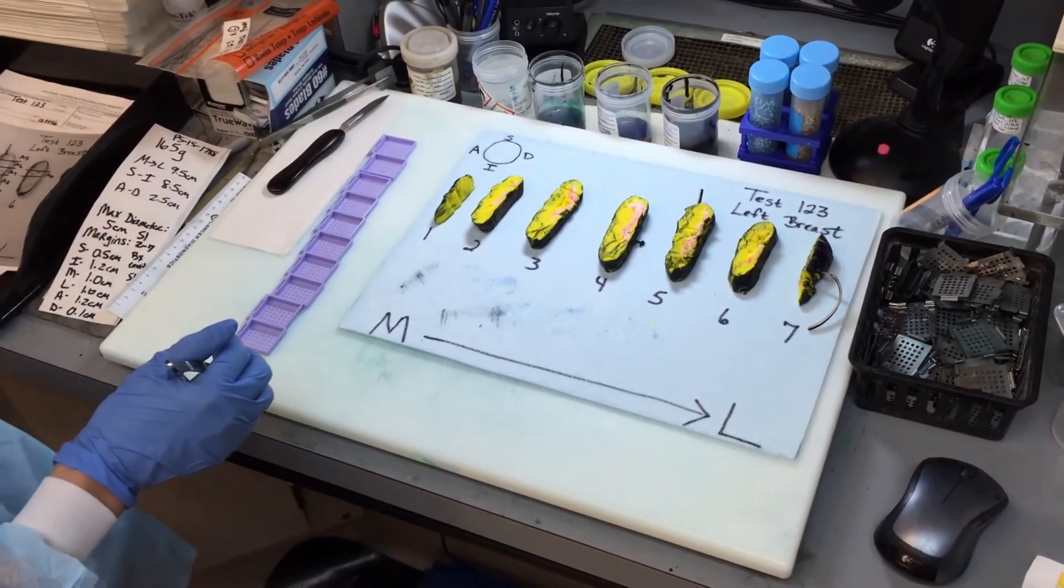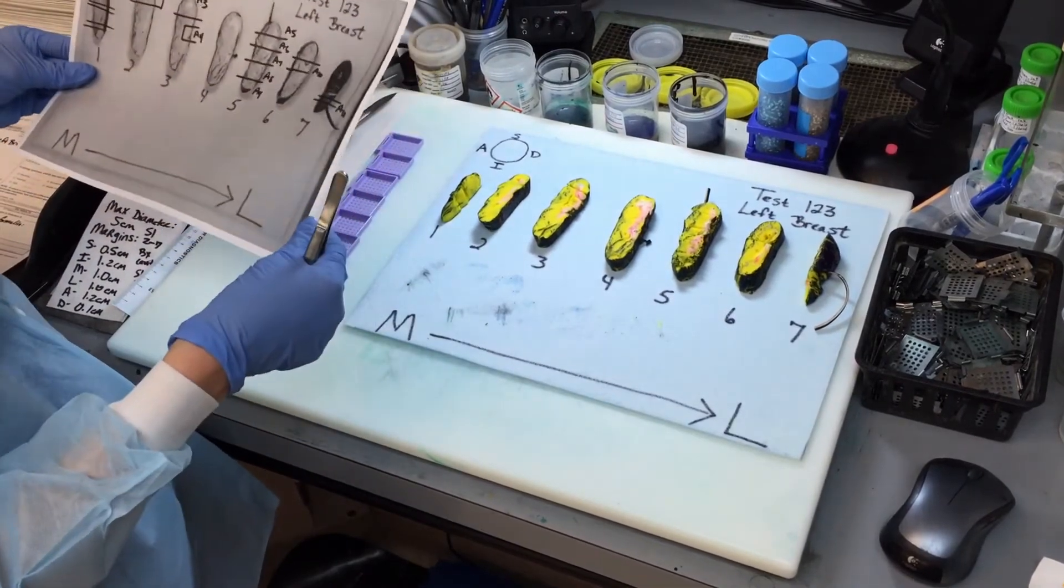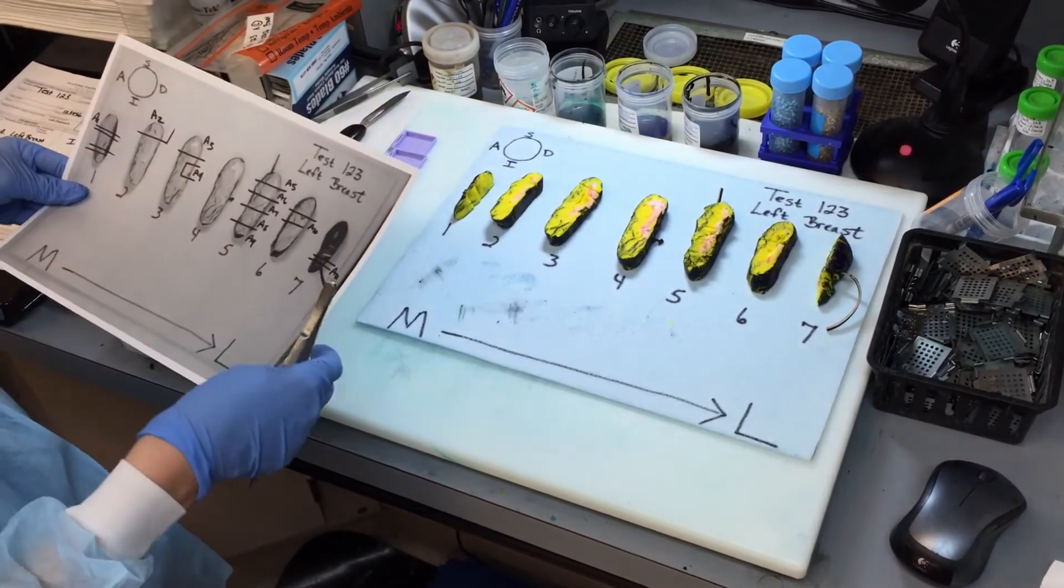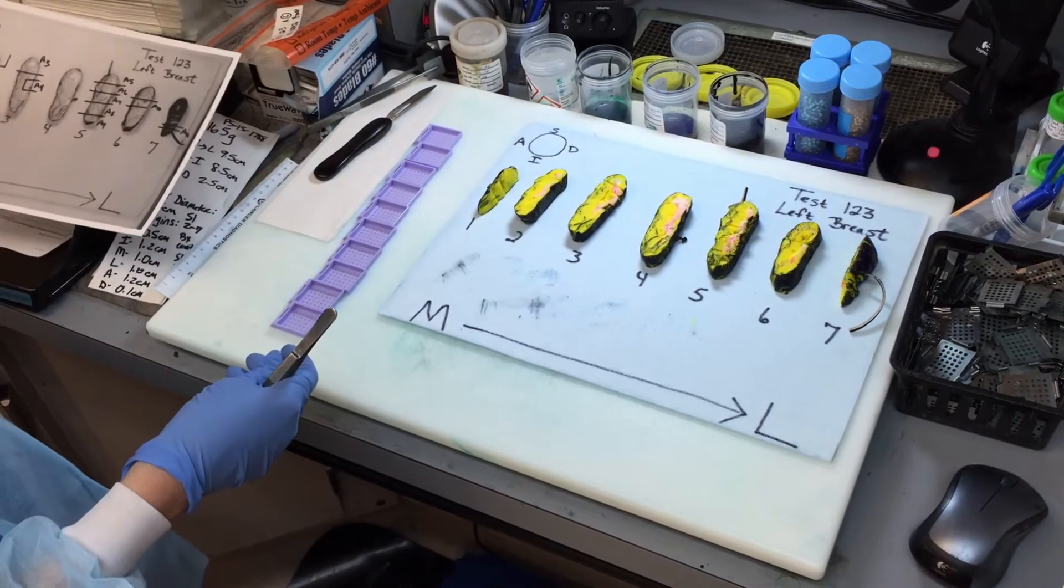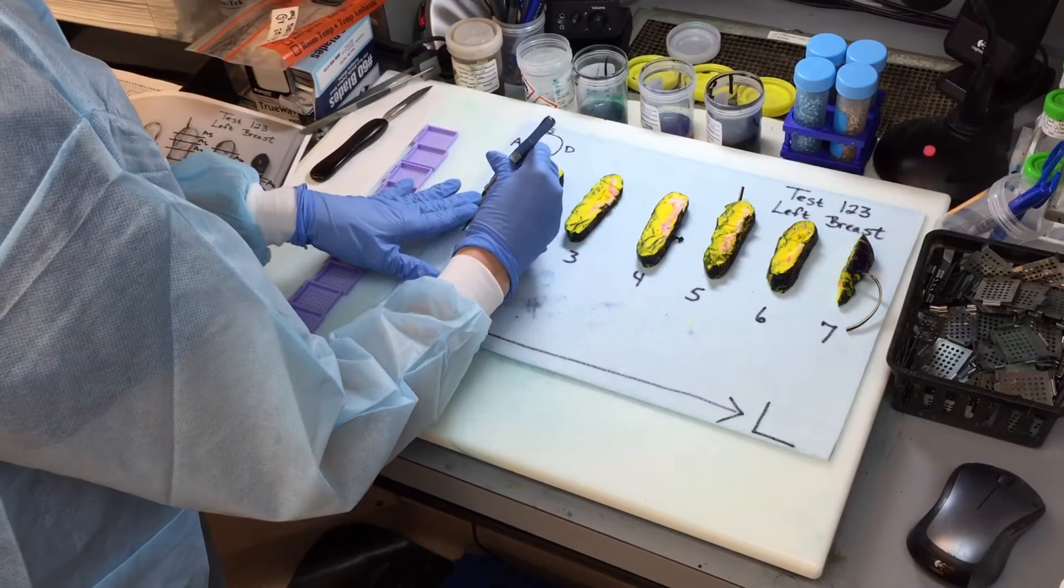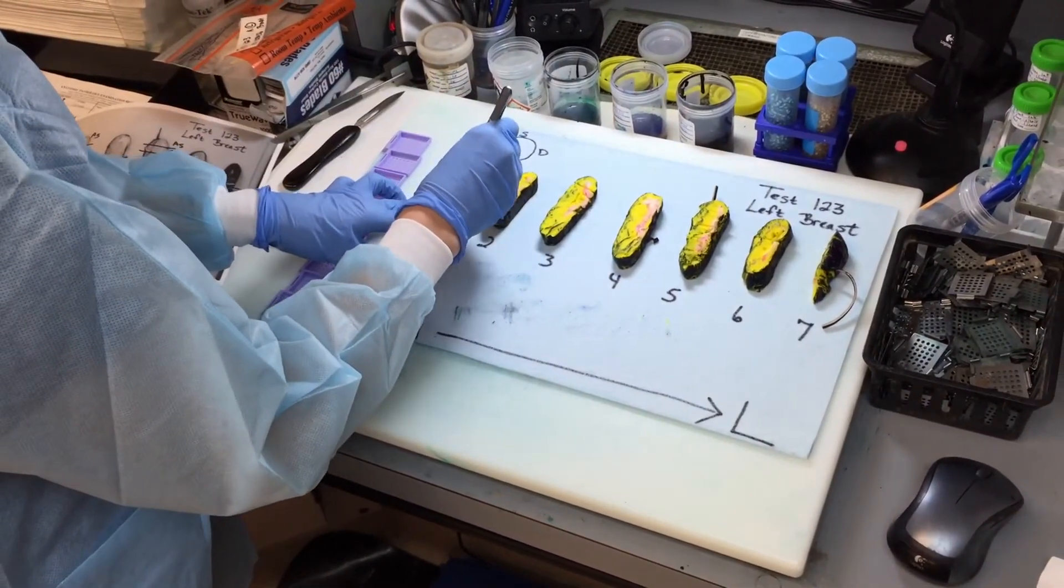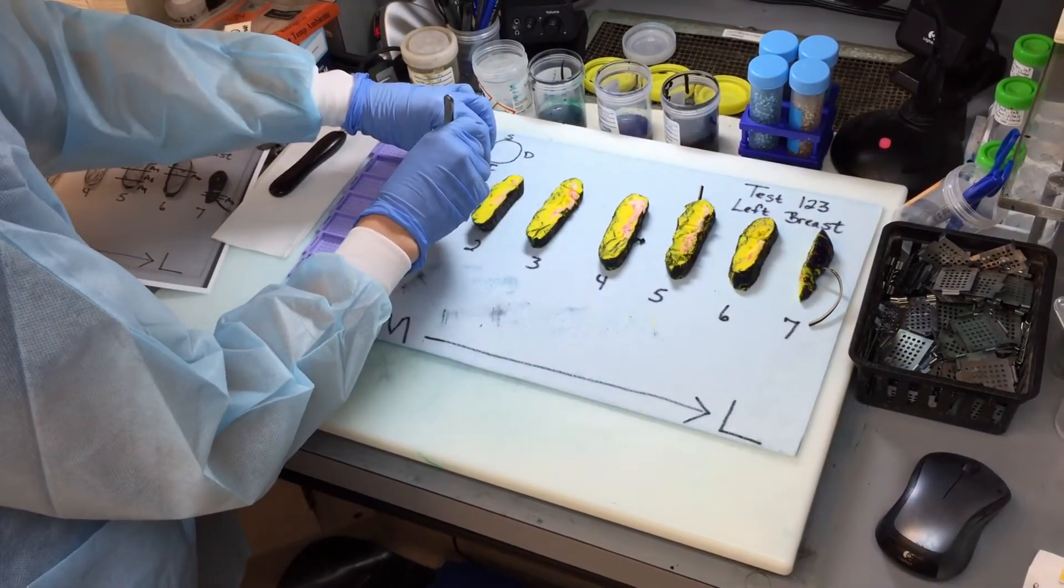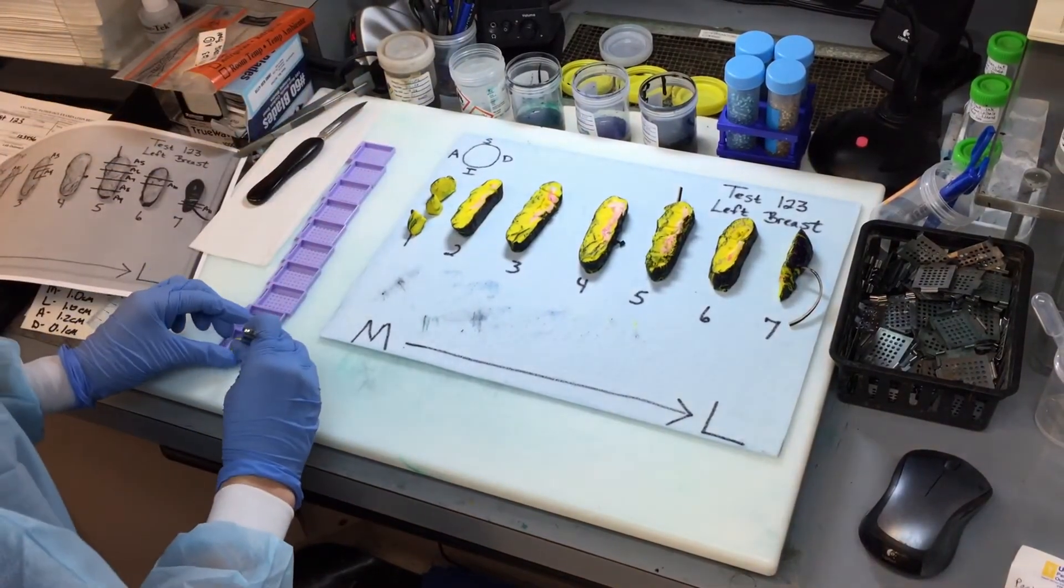So I've printed out two sheets of the picture we've taken and one of them is to use while you're grossing. So you can get it dirty and then the second sheet is to transfer to the clean copy that will go with the requisition and to the attendings. So on slice one, we've made a couple of perpendicular sections and these representative perpendicular sections in slice number one will go into the same cap, which is the medial margin.